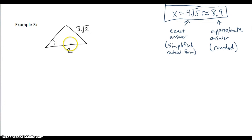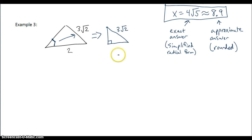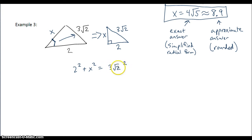Last example. This triangle is not drawn to scale — if you look at the right angle, it isn't drawn as a right angle. So I'm going to redraw this triangle so that it is a right triangle, and then relabel the sides. My hypotenuse is 3 square roots of 2, one of my legs is 2, and my other leg is my unknown, x. I can use the Pythagorean Theorem to find this missing side: 2 squared plus x squared equals 3 square roots of 2 squared. I need to make sure that I put 3 square roots of 2 in parentheses so that the exponent squares everything.